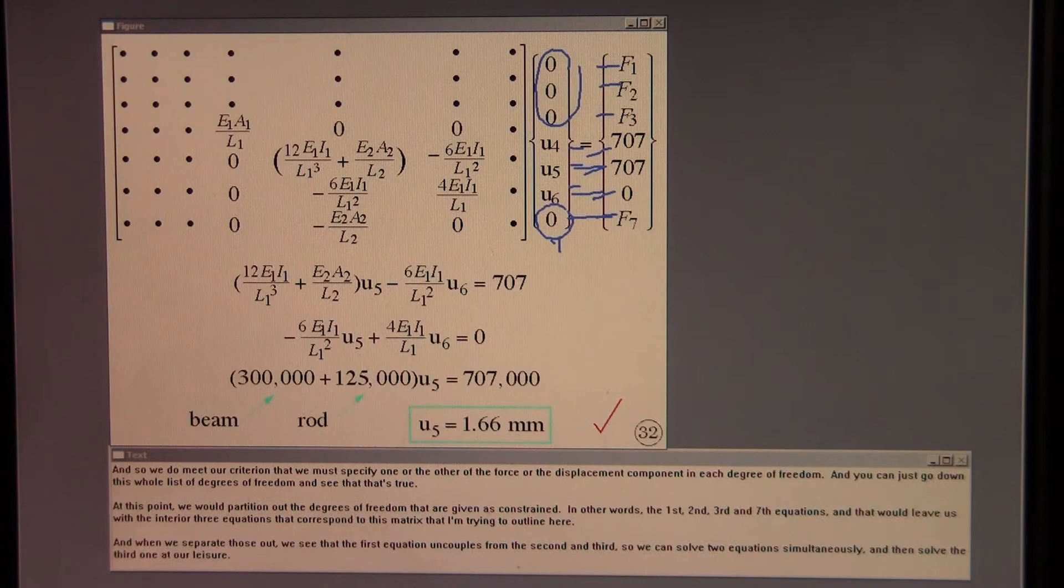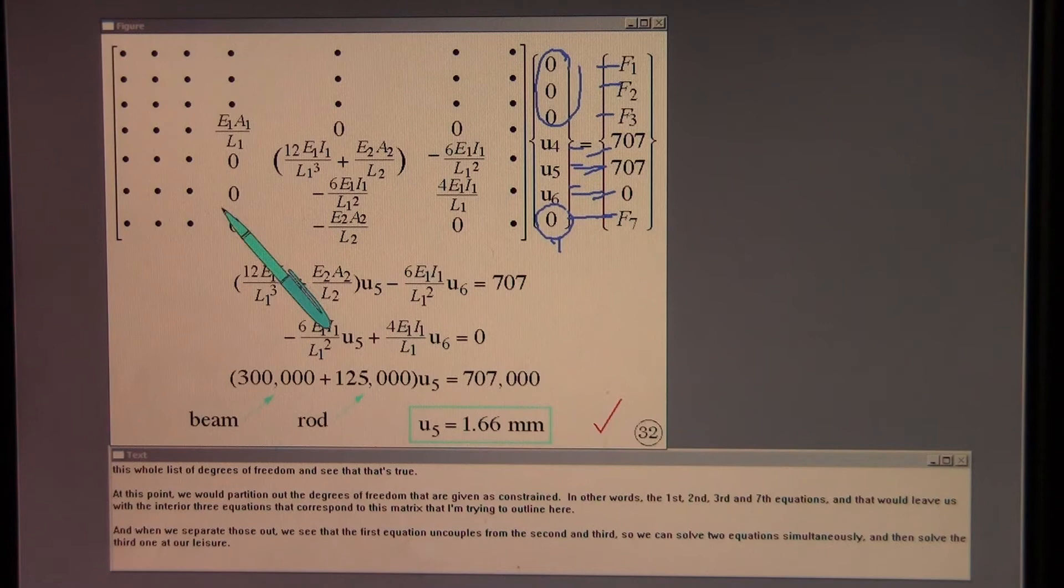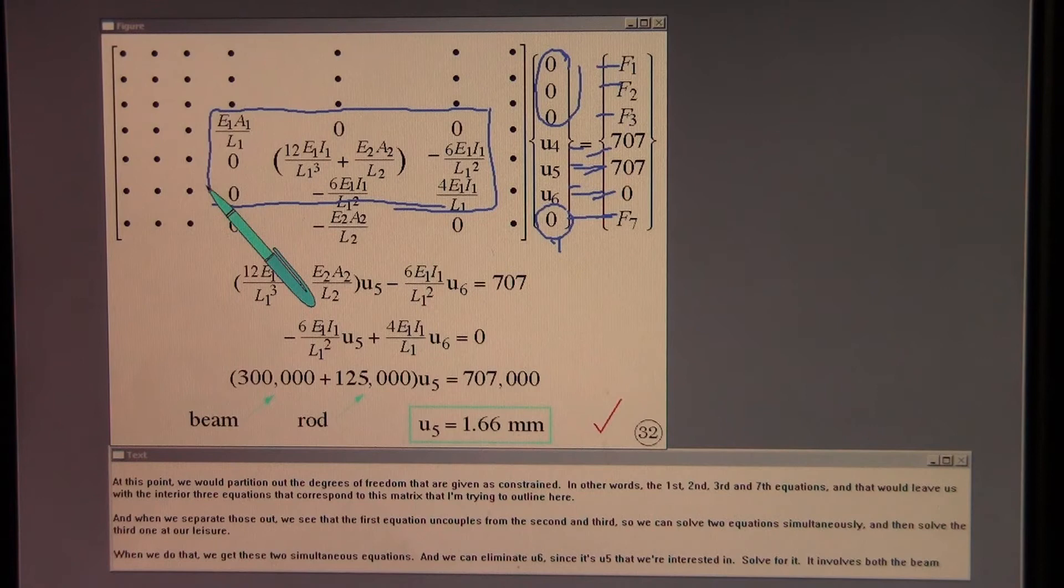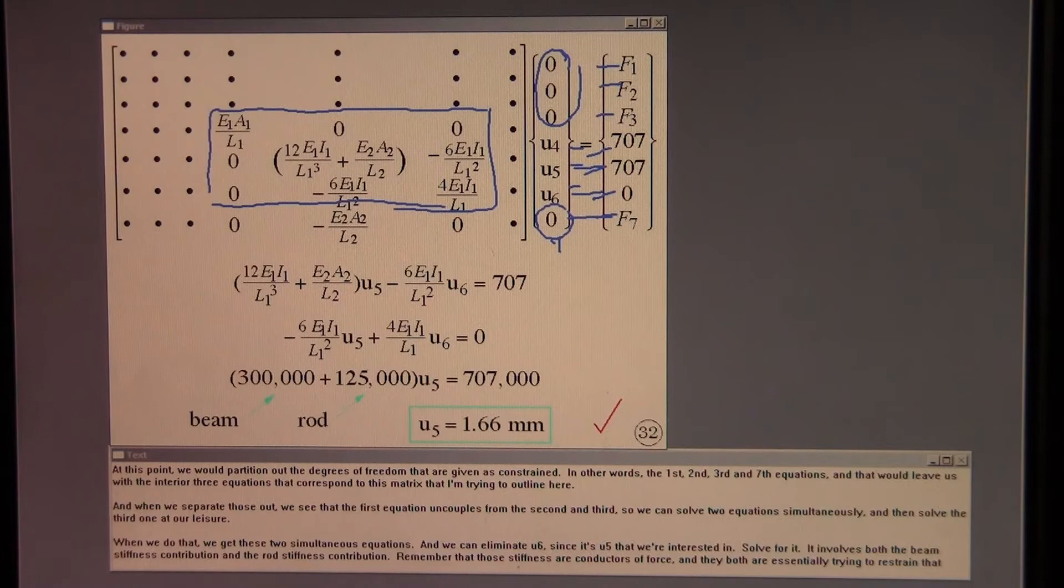At this point, we would partition out the degrees of freedom that are given as constrained. In other words, the first, second, third, and seventh equations. And that would leave us with the interior three equations that correspond to this matrix that I'm trying to outline here. And when we separate those out, we see that the first equation uncouples from the second and third. So we can solve two equations simultaneously and then solve the third one at our leisure.